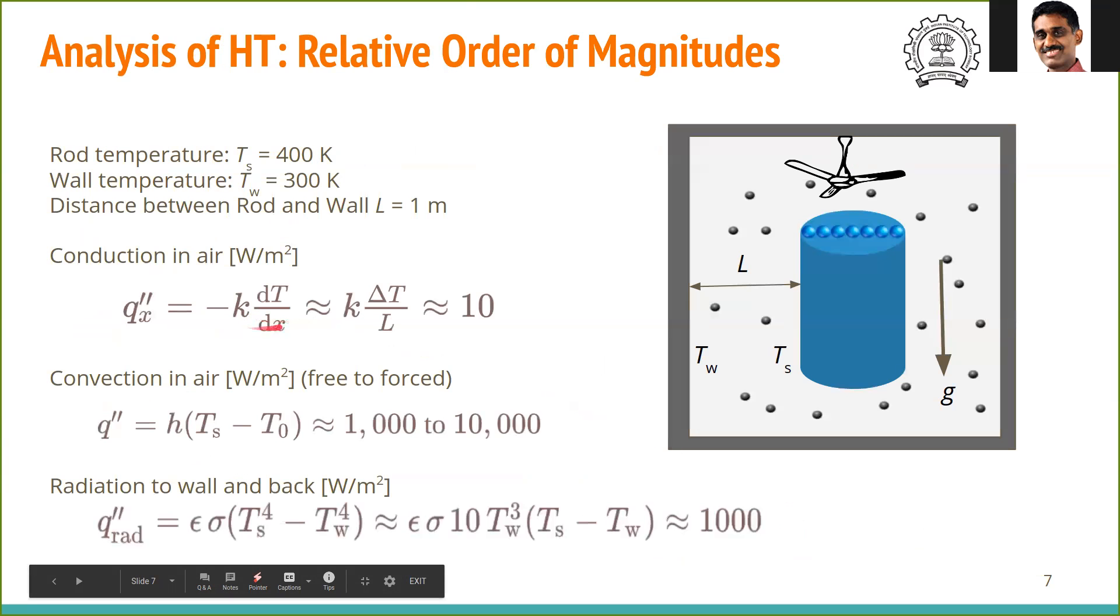So let us estimate these heat transfer rates for this problem that we studied. We have a hot cylinder kept in a room with a wall, otherwise it's completely insulated wall and there is a fan above. So how do we estimate these various quantities? Let us give some typical value. Let's say it's given that the surface temperature of this is 400 Kelvin. And the wall temperature here is 300 Kelvin. So this is at room temperature and this is 100 degrees more than room temperature. The difference between the temperature here is 100 degrees. And for simplicity, let us assume that the distance between the object and the wall is about 1 meter.